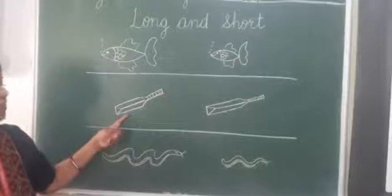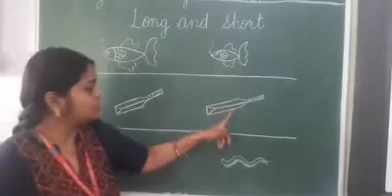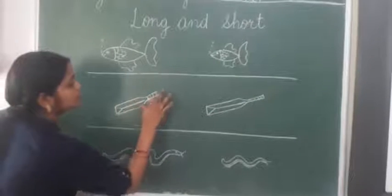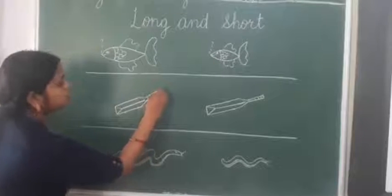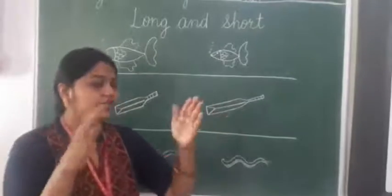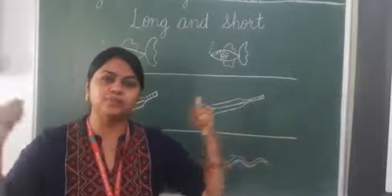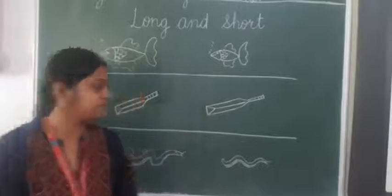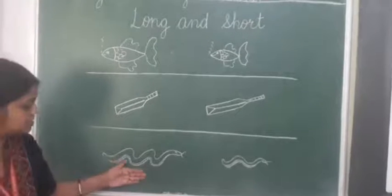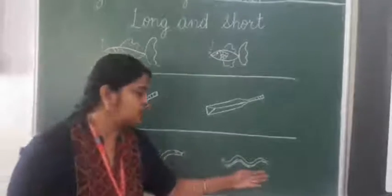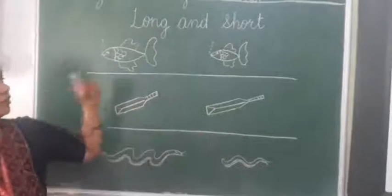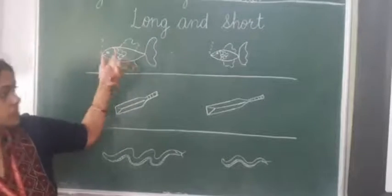Now tell me what is this. Bat. And this one is short. And this bat is long. Do you like to play with bat and ball? Yes. Now what is this? Snake. This snake is long and this snake is short. Long, short. Now look carefully and say — long, short.